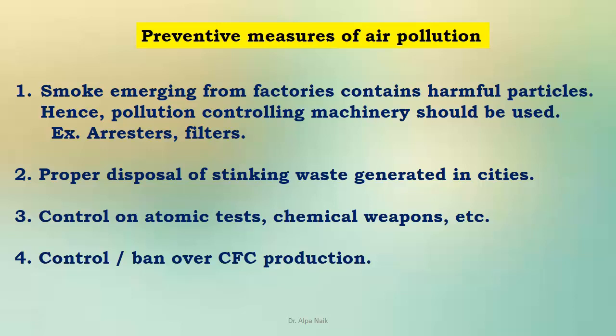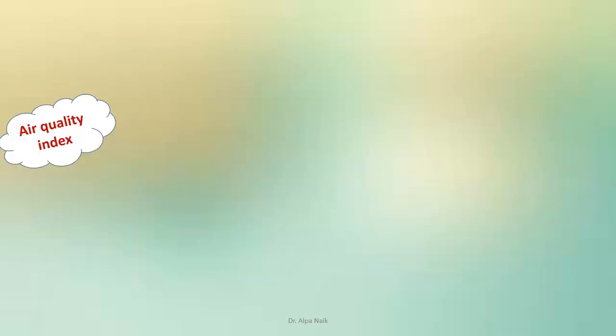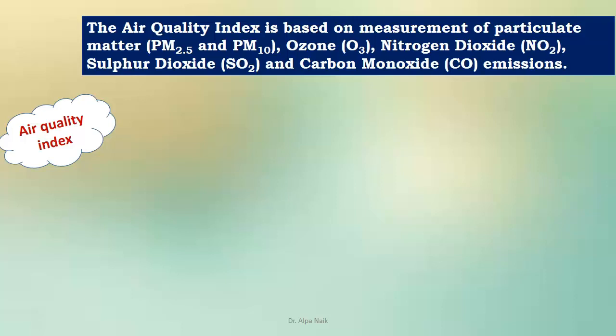We need to prevent and curb air pollution so that we can all live in a healthy environment. Smoke from factories contains harmful particles, so pollution-controlling machinery, filters and arresters should be used. Second, proper disposal of waste generated in cities. Third, control of chemical weapons and control over CFC production. If you want to know the air quality of a particular area, we use the Air Quality Index, which is based on measurement of particulate matter, ozone, nitrogen dioxide, sulfur dioxide and carbon monoxide emissions.